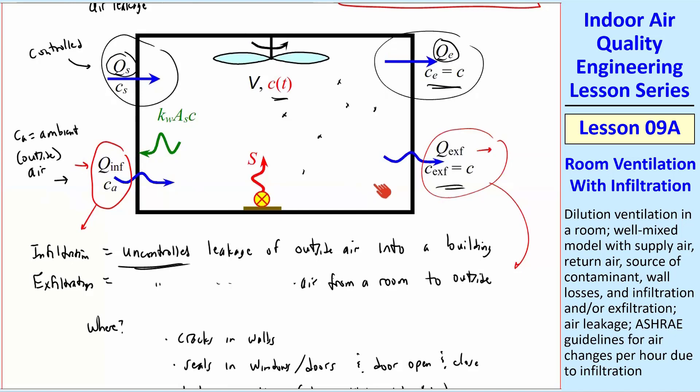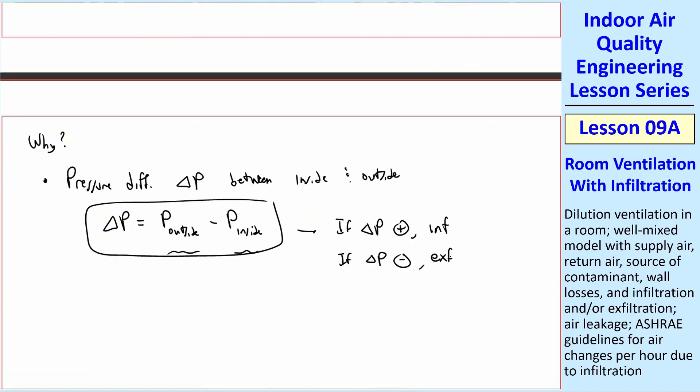If the pressure difference is negative, the air is going to go out. Sometimes you can have infiltration and no exfiltration or vice versa. In a lot of situations, they're pretty much balanced.